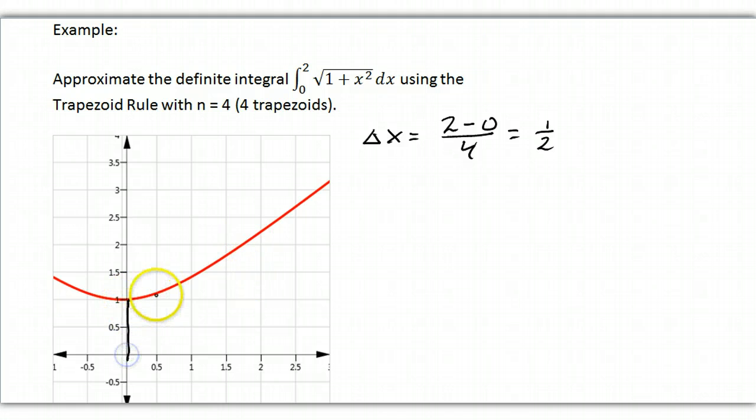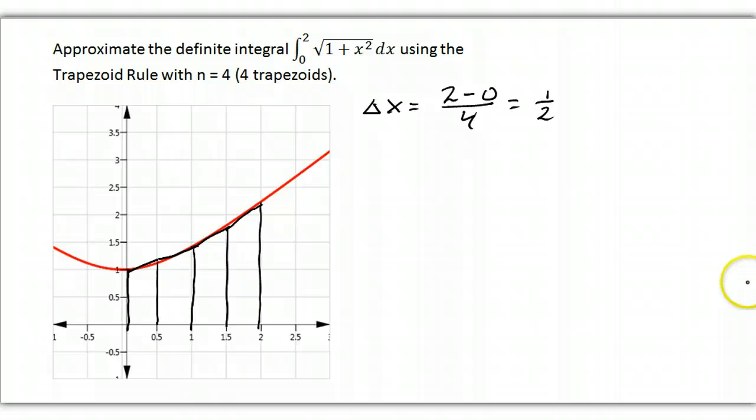Okay? So my first trapezoid is going to be right here, and my next one is going to be there, and my next one is going to be there, and my last one is going to be there. And you can see we're going to get a pretty good approximation of the area just with four trapezoids.